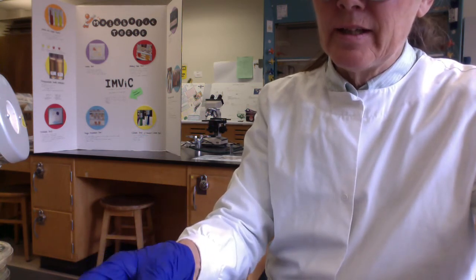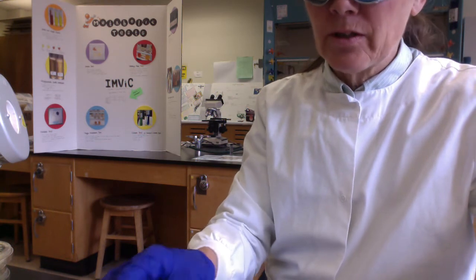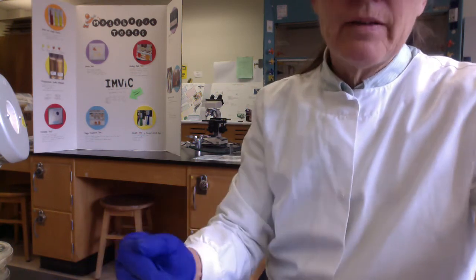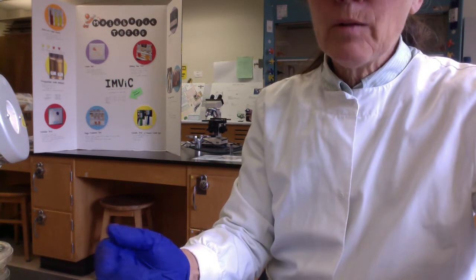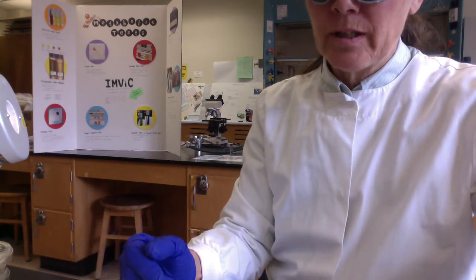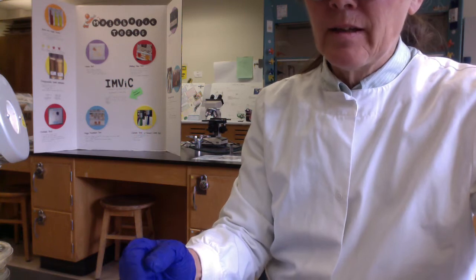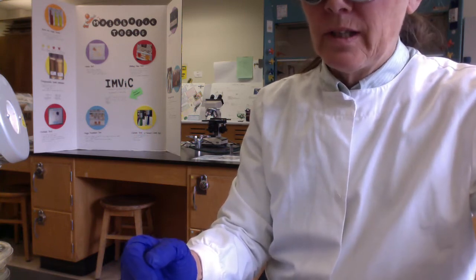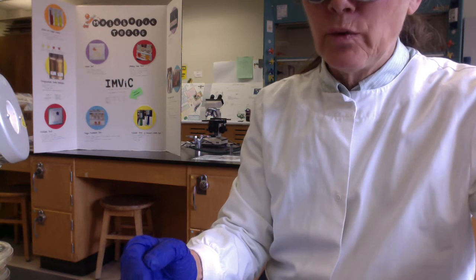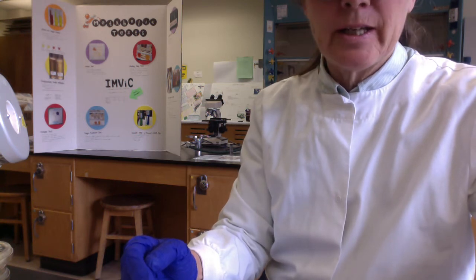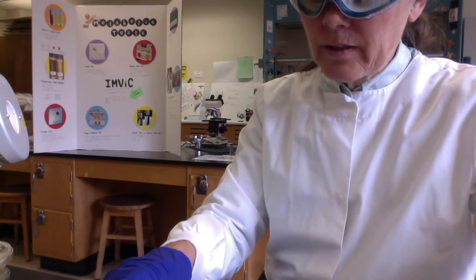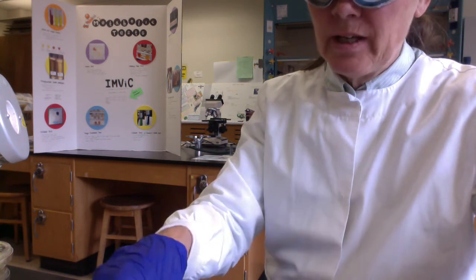So the idea is that as the airborne microbes fall onto the surface of the agar, if they have the transport proteins to transport nutrients in from the agar, and have the enzymes to use those nutrients, the cells will start dividing. And within 24 to 48 hours, we should see colonies. So colonies often are visible with the naked eye.